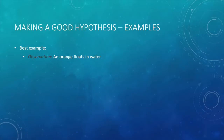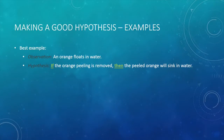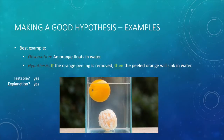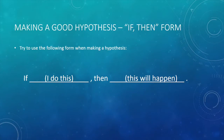Now let's look at the best example of a good hypothesis. We have made the observation that an orange floats in water. Based on our observation, we form the following hypothesis: if the orange peeling is removed, then the peeled orange will sink in water. This statement is testable — we can easily peel the orange and place it in the water. We have also provided an explanation for why the orange floats: the peeling must be the reason. Notice that this hypothesis also contains our prediction — what we think will happen when we put the peeled orange in water. When forming a good hypothesis, try to use the if-then form: if I do this, then this will happen.